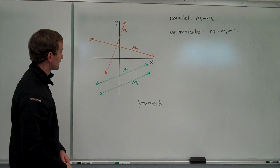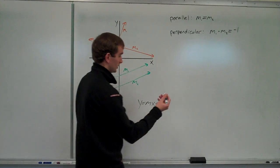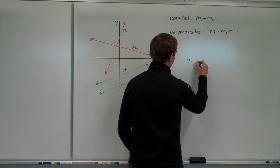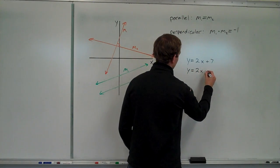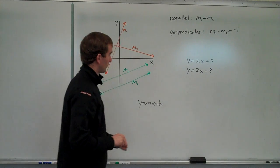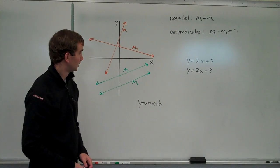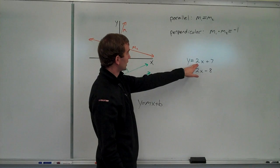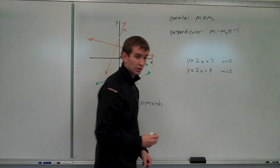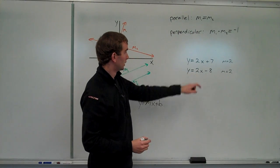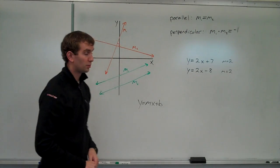There are a number of ways we might see problems related to this. For example, if I gave you Y equals 2X plus 7 and Y equals 2X minus 8, and asked you to tell me whether those two lines are parallel, perpendicular, or neither — you look at them and say the slope of this line is 2, the slope of this line is also 2. Both are 2, and since the slopes are the same, the lines have to be parallel.